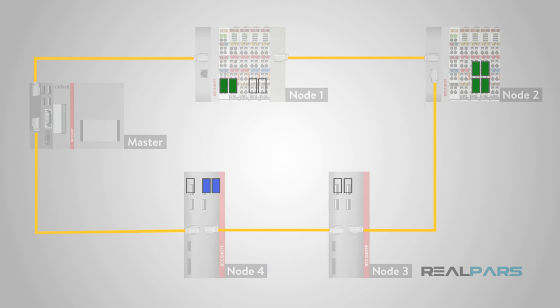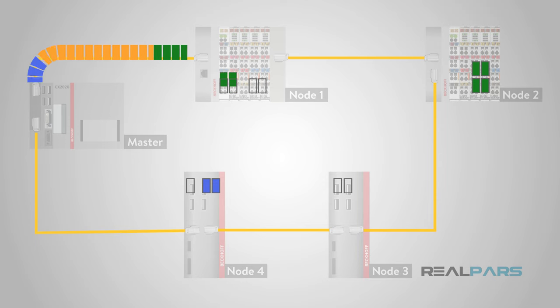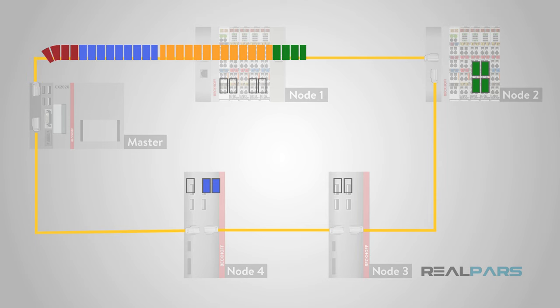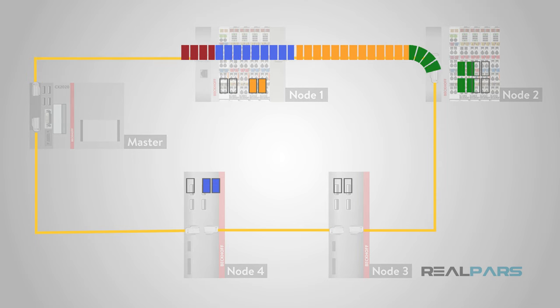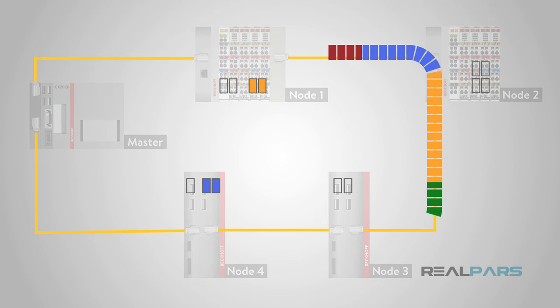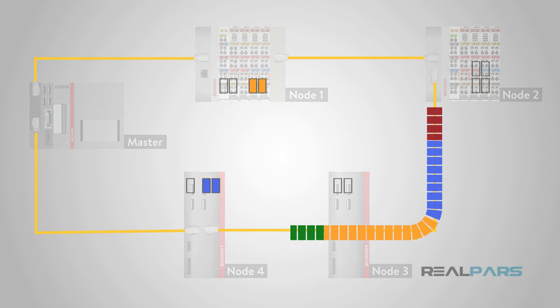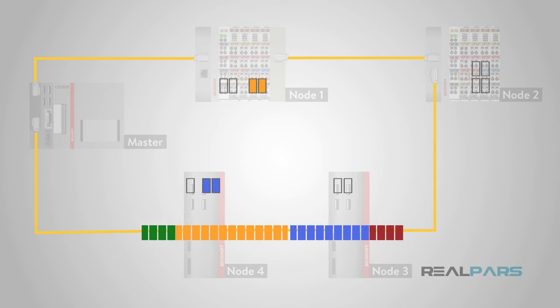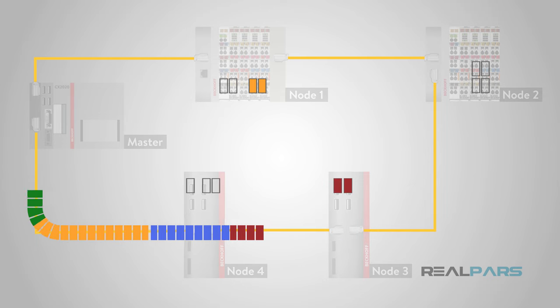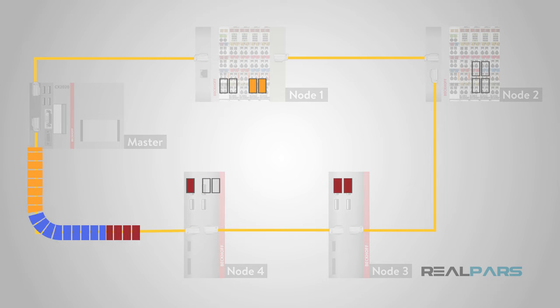Each EtherCAT device processes the data frame that is relevant to it in its hardware or software, on the fly, and adds its data to the data frame as it's passing through the network.